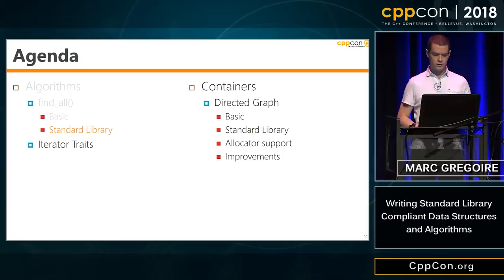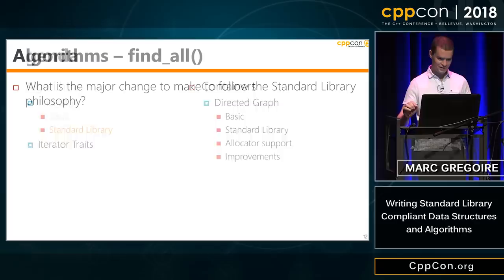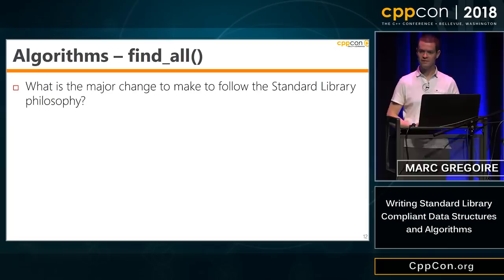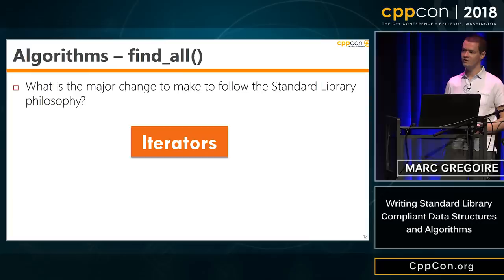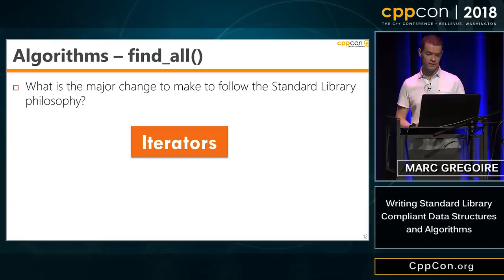To fix this, let's rewrite the algorithm and follow the standard library philosophy. What do we have to change? We have to use iterators. We don't want to use a specific container like a vector of values or a vector of iterators. We need to use only input iterators and output iterators.